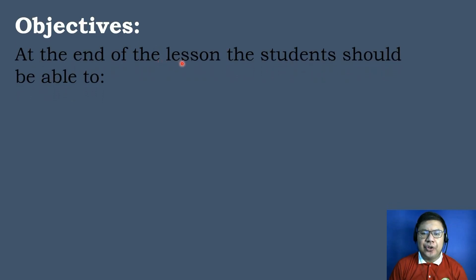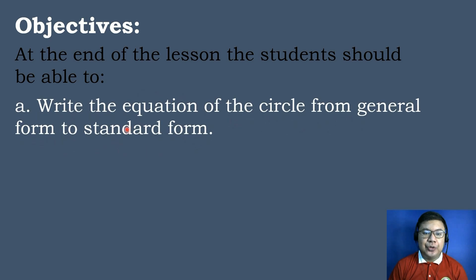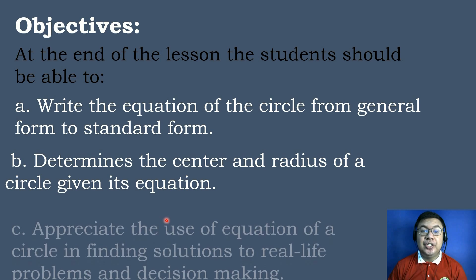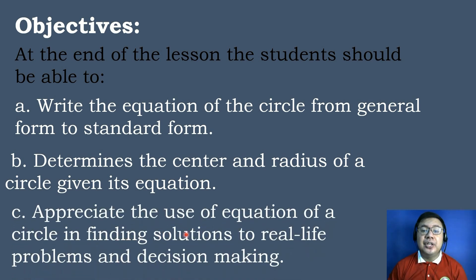Let's have the following objectives in today's topic. At the end of the lesson, the students should be able to: Letter A, write the equation of the circle from general form to standard form; Letter B, determine the center and radius of a circle given its equation; and Letter C, appreciate the use of the equation of a circle in finding solutions to real-life problems and decision-making.